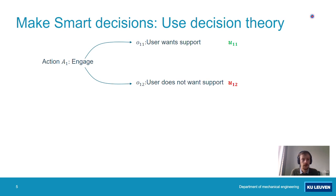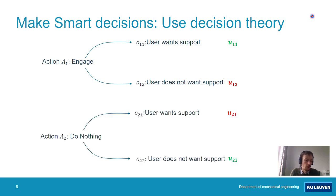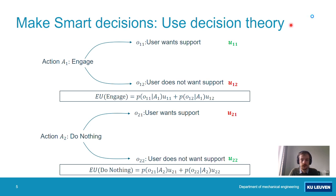A similar reasoning has to be done for all the actions the controller can do. In this case, the only other action is doing nothing. Then for each of these actions, we calculate the expected utility. The expected utility starts from the utility scores for all the situations and weighs them with the probability of ending up in such a situation. These probabilities follow from the motion models introduced earlier. The controller will then make the action that maximizes the expected utility, so that we always do what is best for our user.